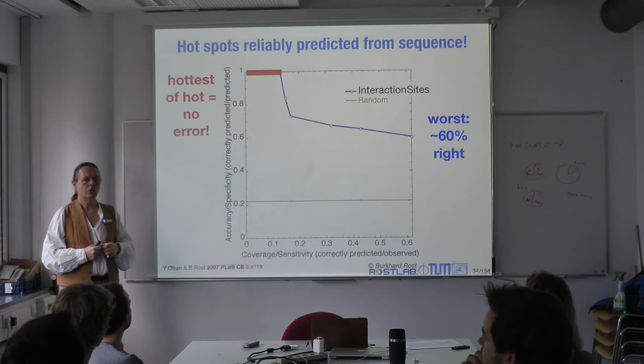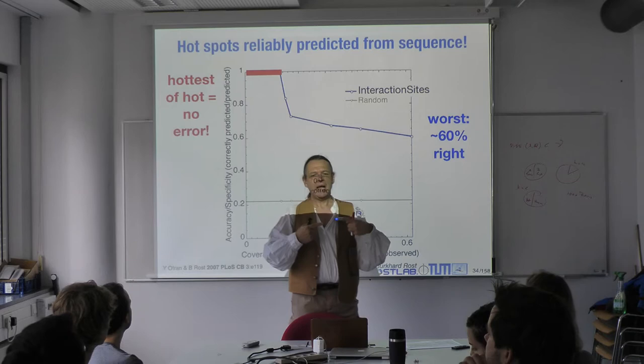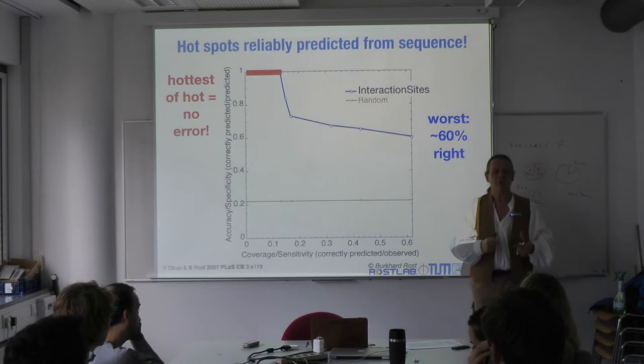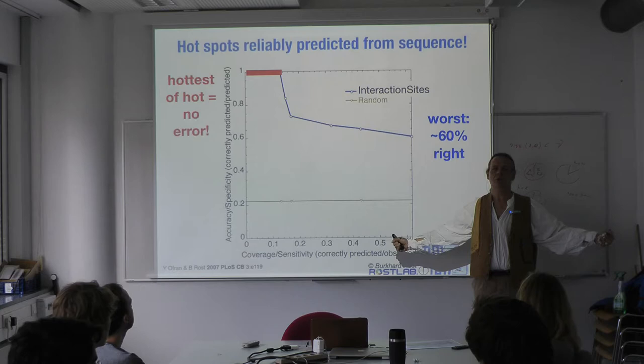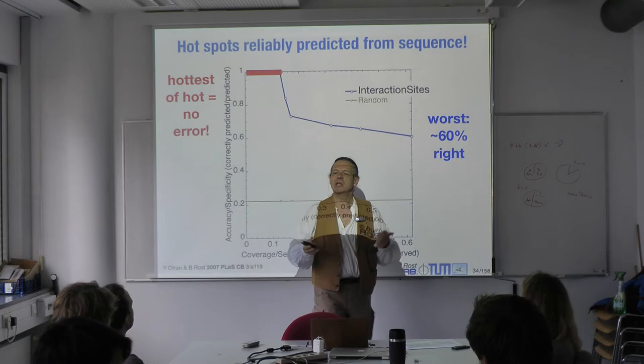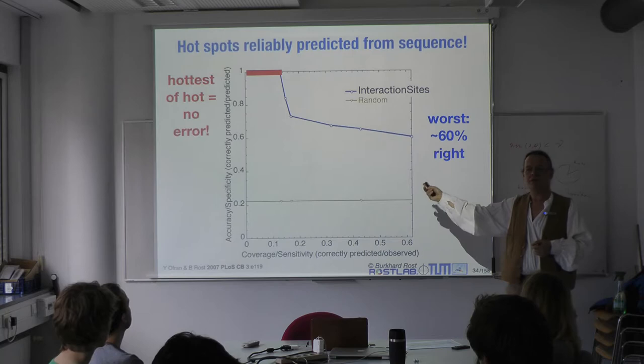We never trained on hotspots. The network was only trained on residues binding to other proteins or not. It saw all the binding residues — that's all it saw. And if it can then predict hotspots, then you have extracted some truth. You have been able to generalize even if you cannot measure it at the level of predicting which residue binds to other things. A hotspot is a different measurement. That's another way in which you can prove you have generalized.